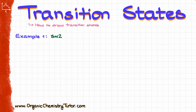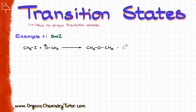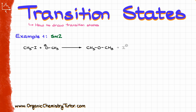So let's start by looking at a familiar example: a simple SN2 reaction in which I have a reaction between this methyl iodide and methoxide, and as a result I'm going to get an ether and I⁻ floating around, which we don't really care about.